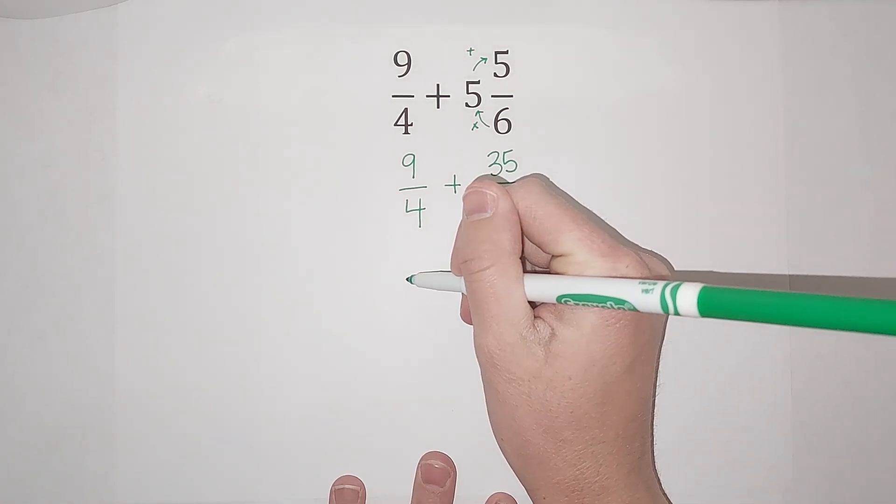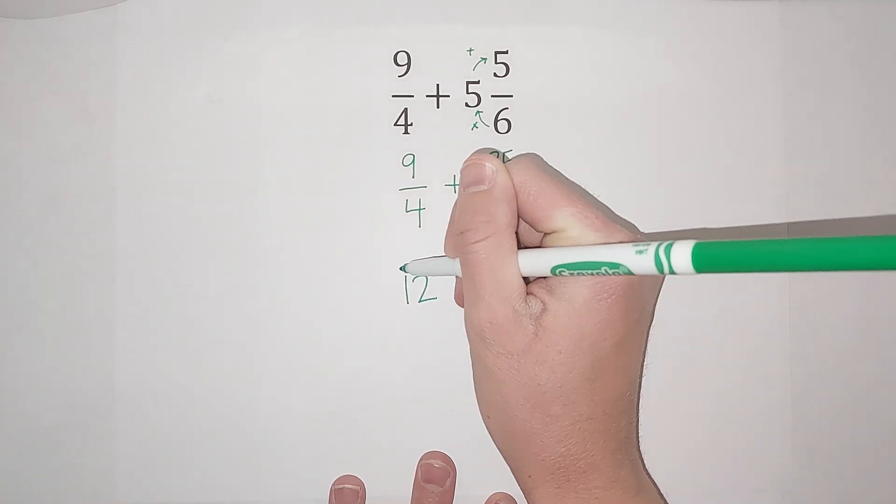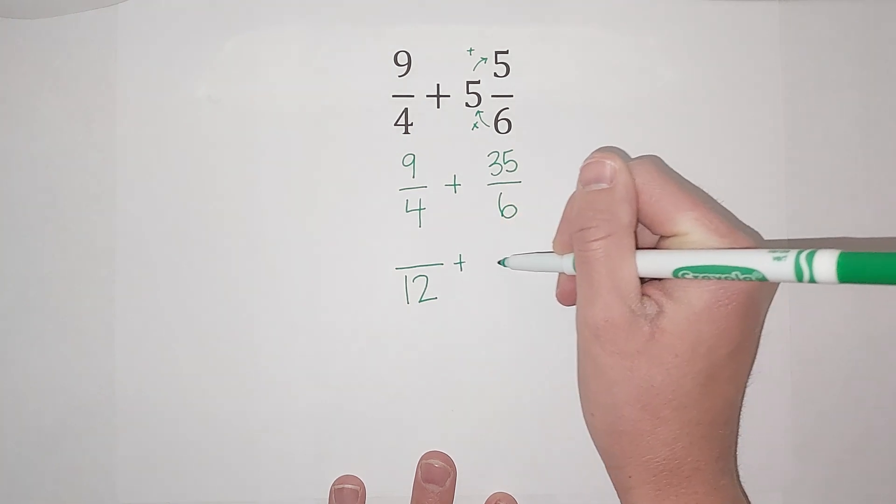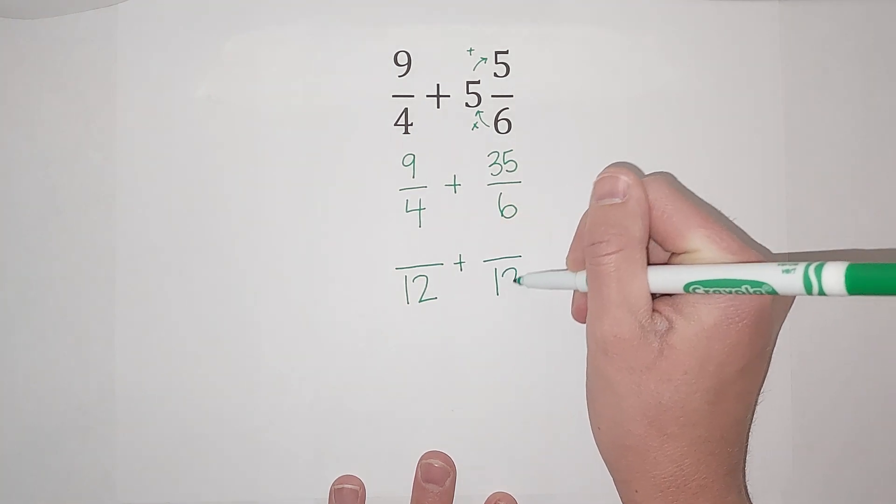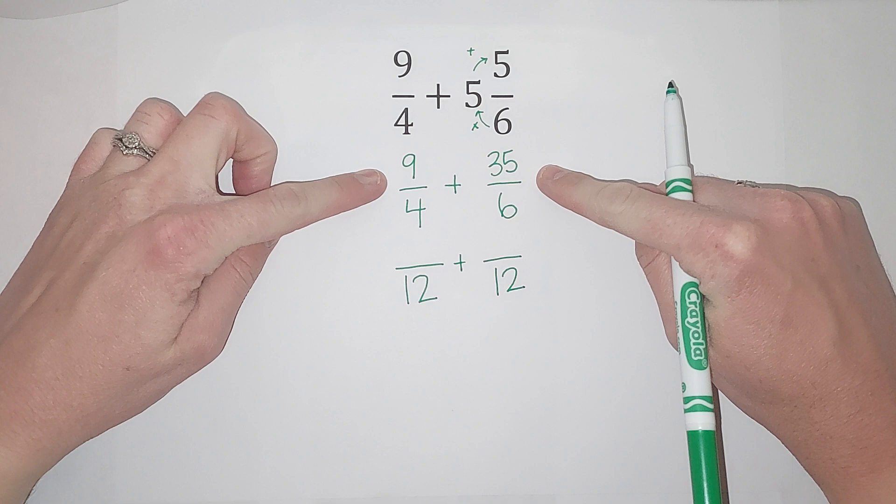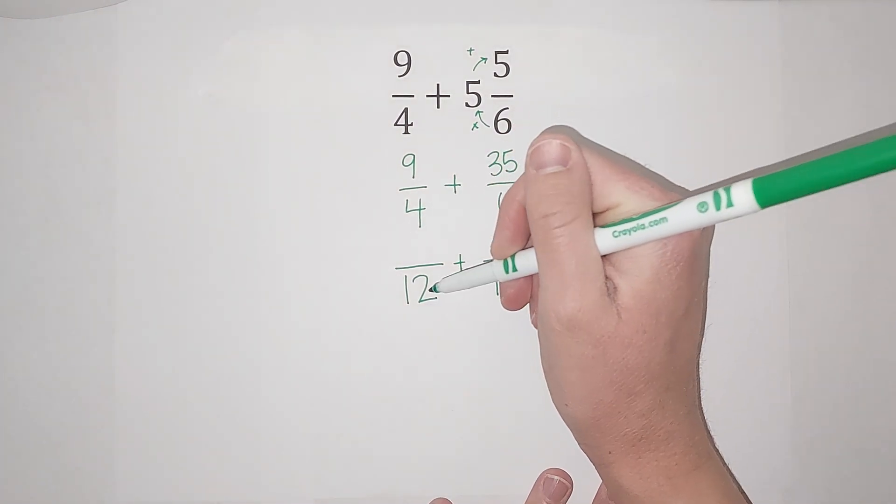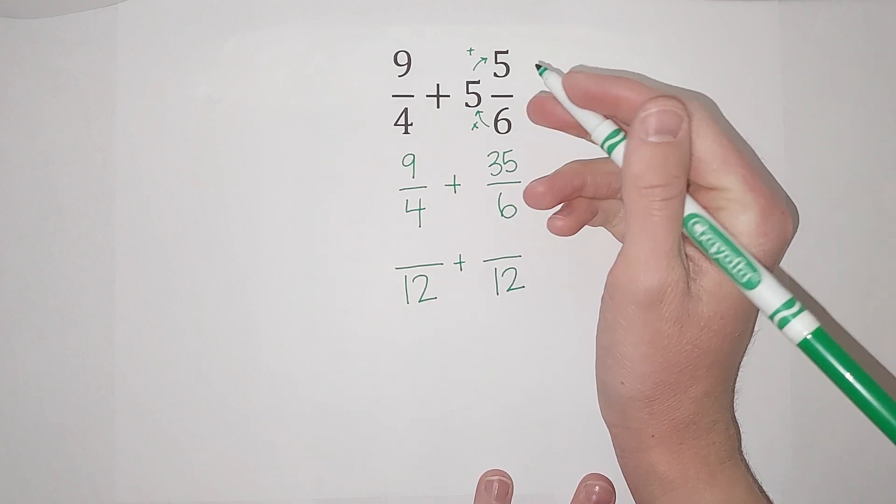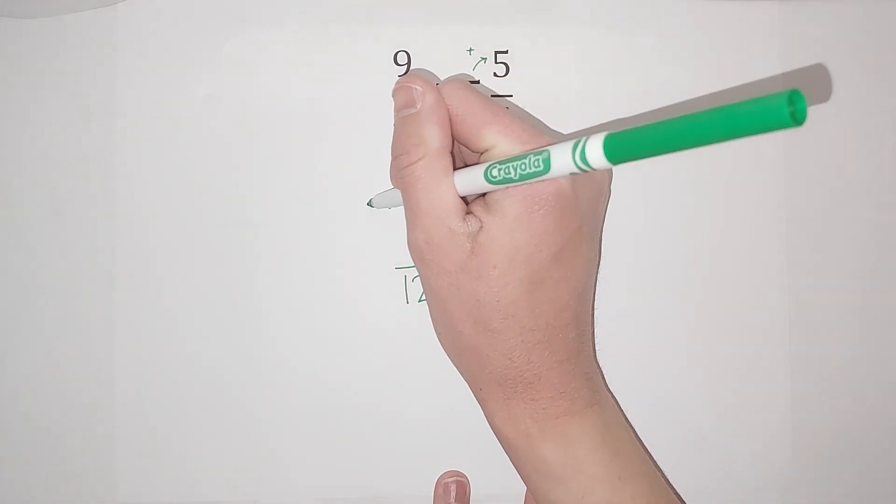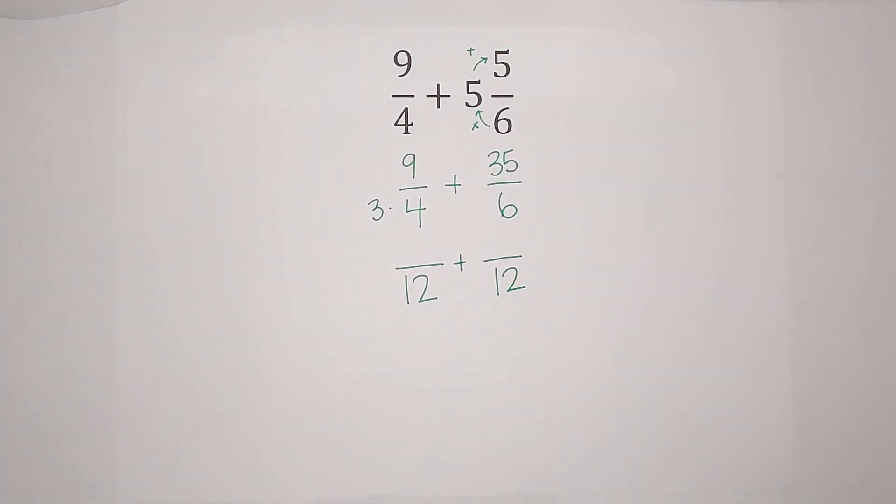So what I want is two fractions with 12 as their denominators that are equal to these fractions. So what did I do to 4 to get it to be a 12? Well, I would multiply it by 3. But I can't just go multiplying by 3 wherever I want because that would change my fraction.